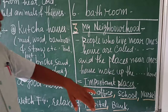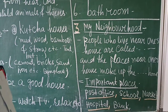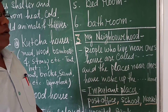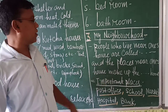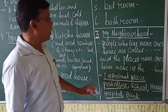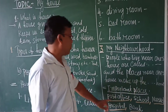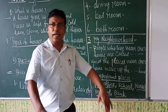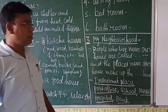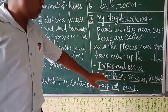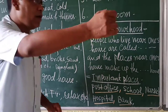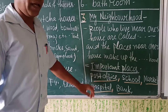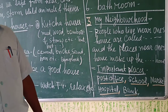Now we move to the last point: the important places in our neighborhood. These are places which are very helpful to us. In our neighborhood we find places like the post office, school, market, hospital and bank, among many others. They are helpful to us — whenever we need anything we immediately go there to get our necessary things. These are the places which help us meet our basic needs.